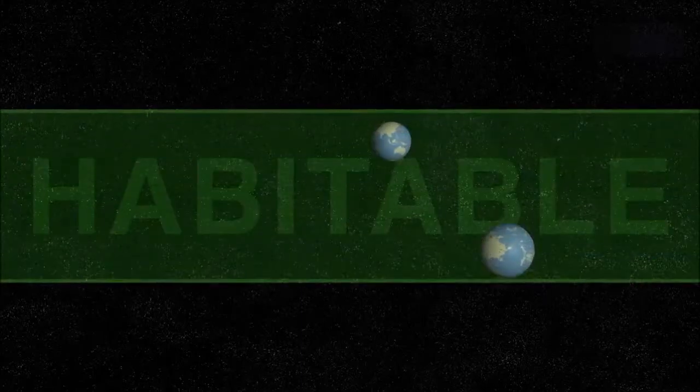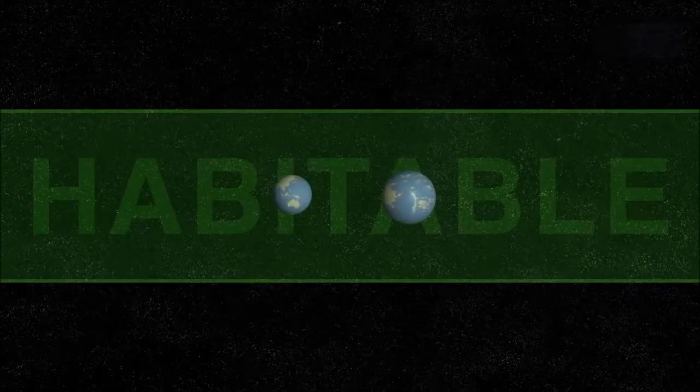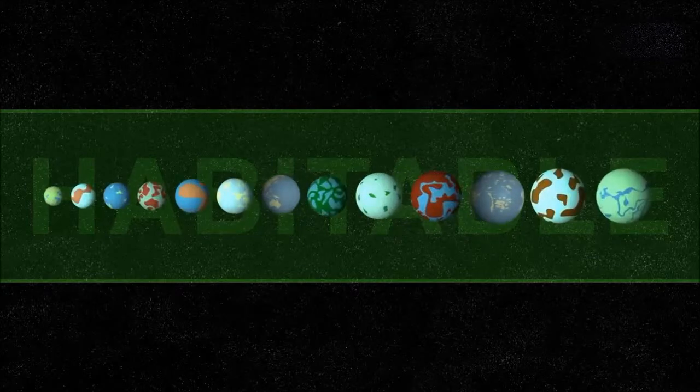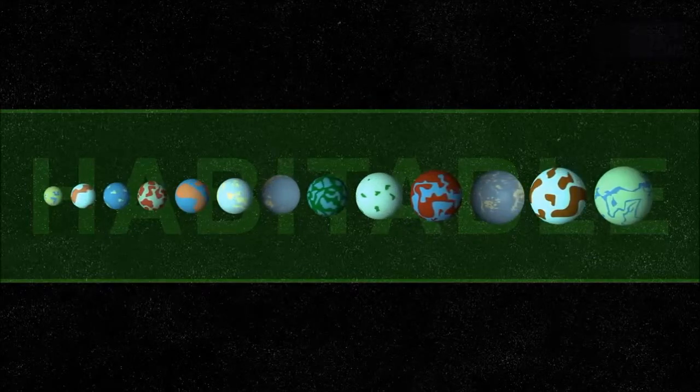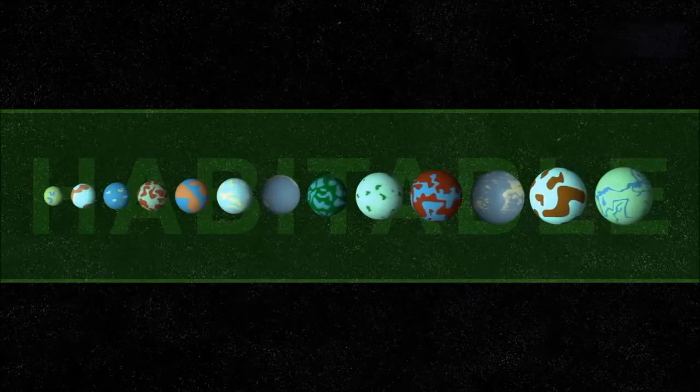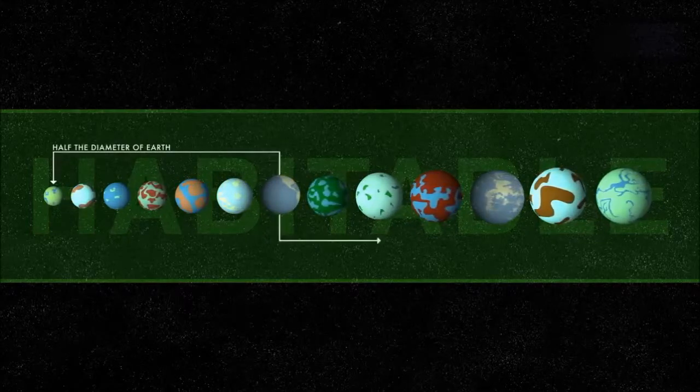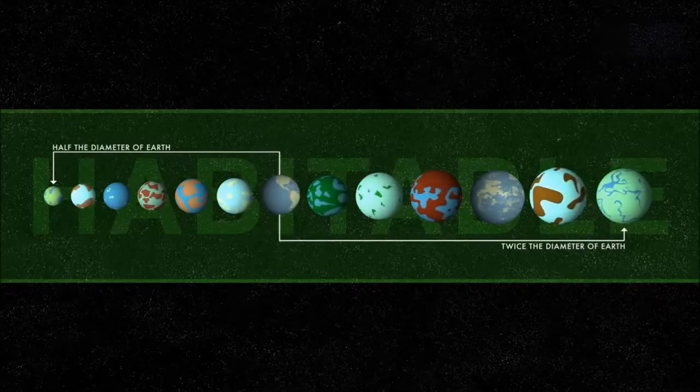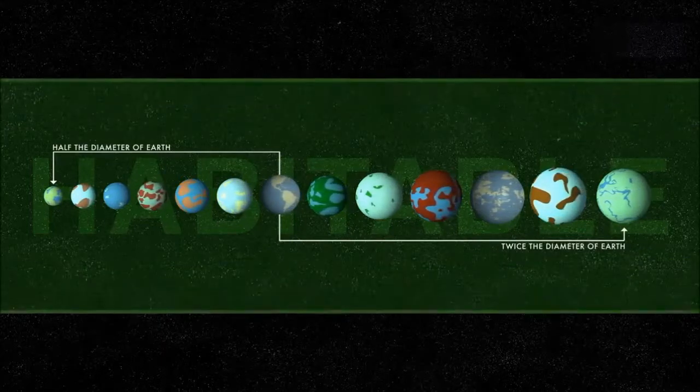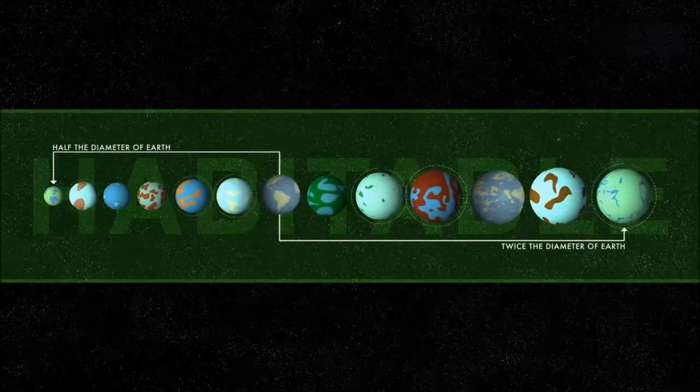Kepler-452b isn't the first exoplanet found in a habitable zone. Indeed, about a dozen such worlds in this size range have been discovered so far. That is, ten to fifteen planets between one-half and twice the diameter of Earth, depending on how the habitable zone is defined and allowing for uncertainties in measured planetary sizes.